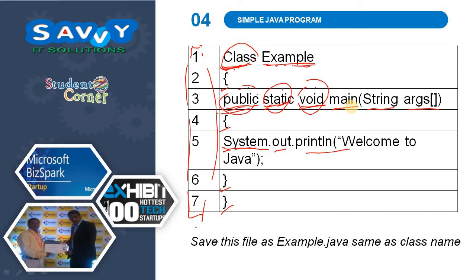args represents an array of arguments of type String. System is a class, out is an object, and println is the method used to display the message. This is the way we write sample Java programs. We need to save the file as example.java — 'example' being the name of the class.